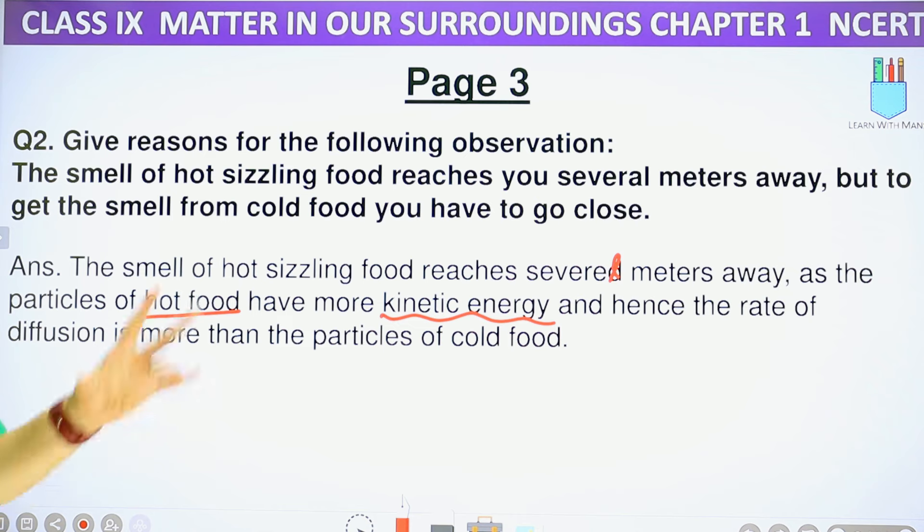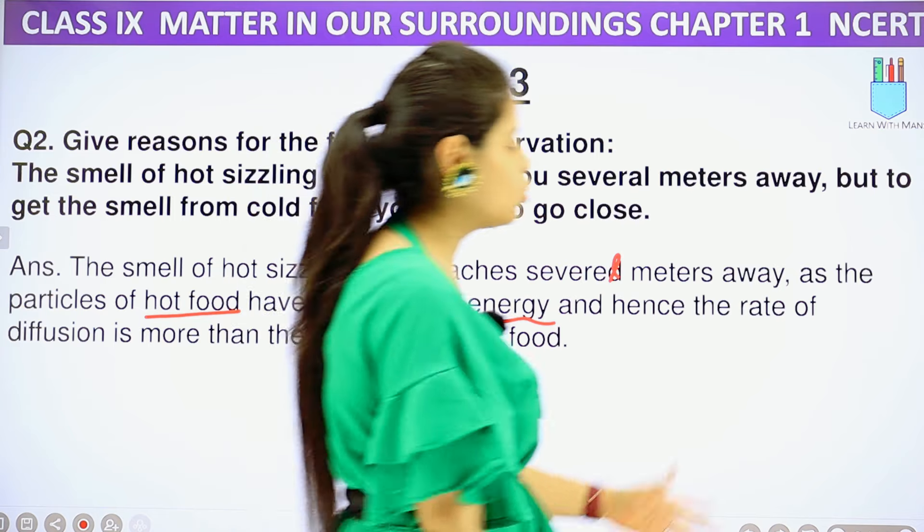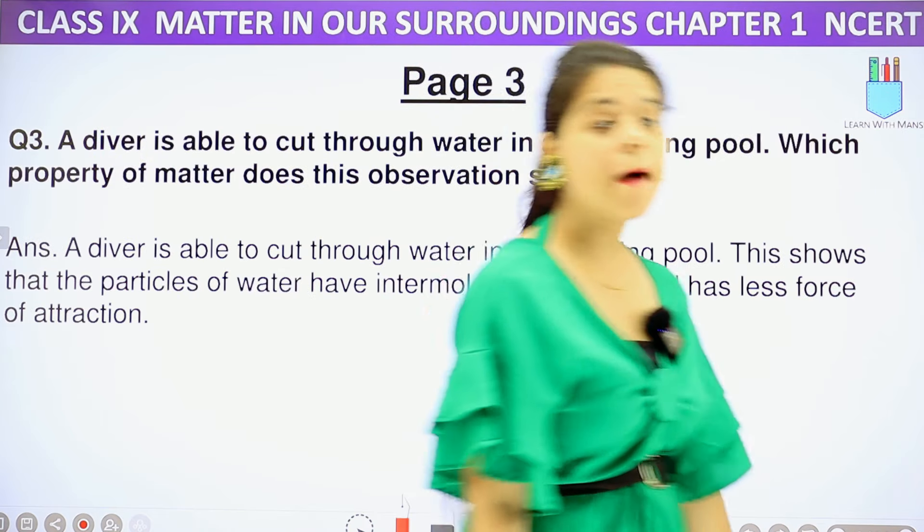And hence the rate of diffusion is more than the particles of cold food. So its kinetic energy is more, its particles can travel more, and so we are far from meters away. You can find something in your kitchen that makes something big.